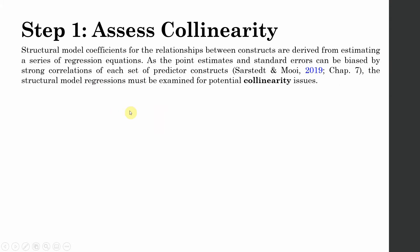We have already done this for items and for our formative model. Structural model coefficients for the relationship between constructs are derived from estimating a series of regression equations. Point estimates and standard errors can be biased by strong correlation of each set of predictor constructs — the predictor constructs may have higher correlation with each other, and then your point estimates may get biased. For this purpose, you will have to assess your collinearity issues.